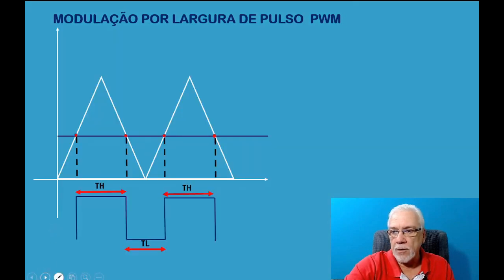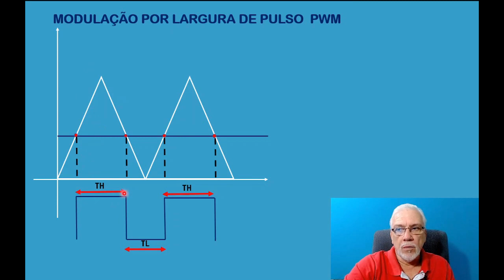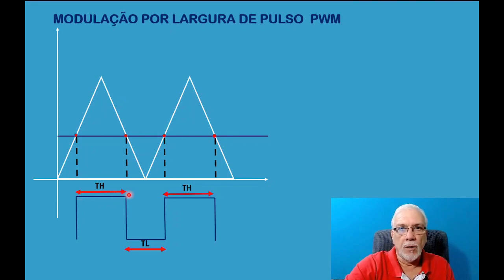Podemos observar nas ilustrações os dois pontos em vermelho: são os pontos de cruzamento entre o nível de tensão DC e a forma de onda triangular gerada pelo circuito eletrônico. Essas duas ondas entram no comparador, e quando a onda triangular for superior ao nível de tensão contínua, você terá uma largura de pulso positiva. O amplificador operacional, trabalhando em malha aberta com ganho infinito, gera na saída o nível high — o valor da fonte ocupa o tempo TH, que é o tempo de estado alto, e TL, que é o tempo de estado baixo.